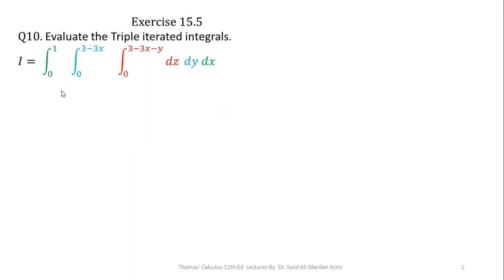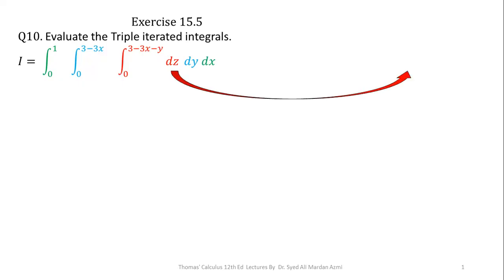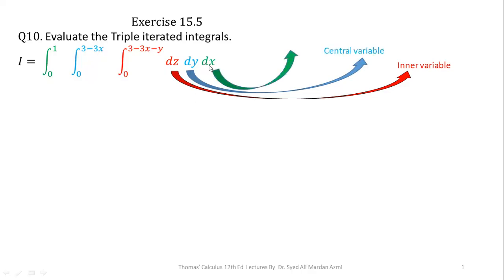In triple integrals, we have to know some terminologies before we can start solving. We have three variables involved. I have chosen three colors — red, blue, and green. The variable on the most inner side is called the inner variable. In question number 10, Z is our inner variable. The variable indicated with blue color is our central variable. And X, the most outer variable, is called the outer variable.